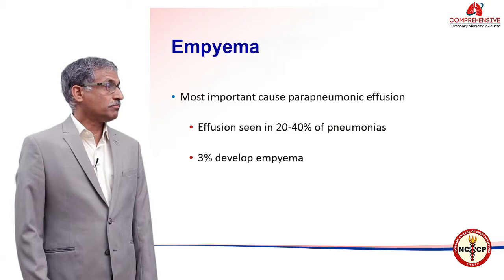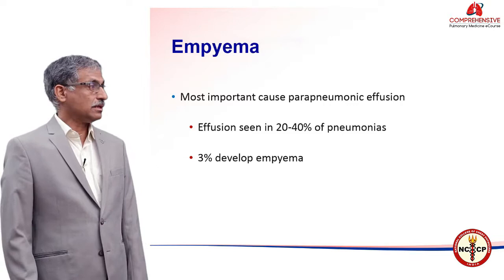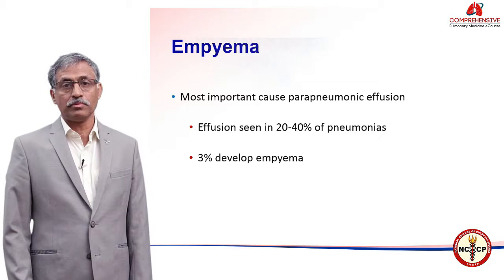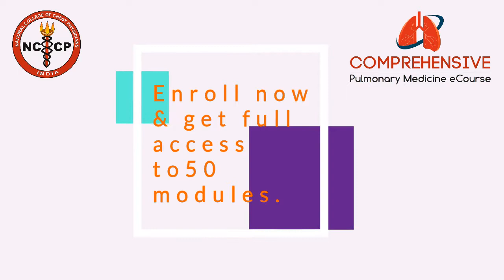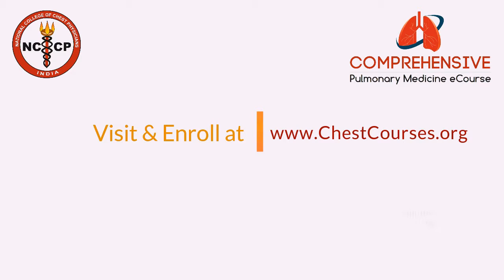Looking into the epidemiology, the most important cause is parapneumonic effusions. Effusions are seen in 20 to 40% of pneumonias, and out of them 3% develop empyemas. The incidence is increasing worldwide.